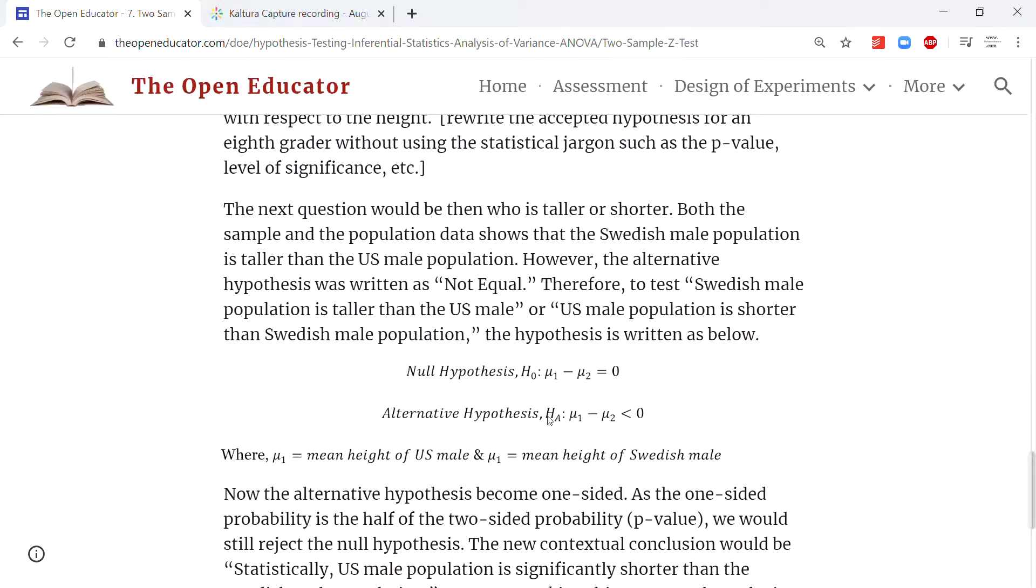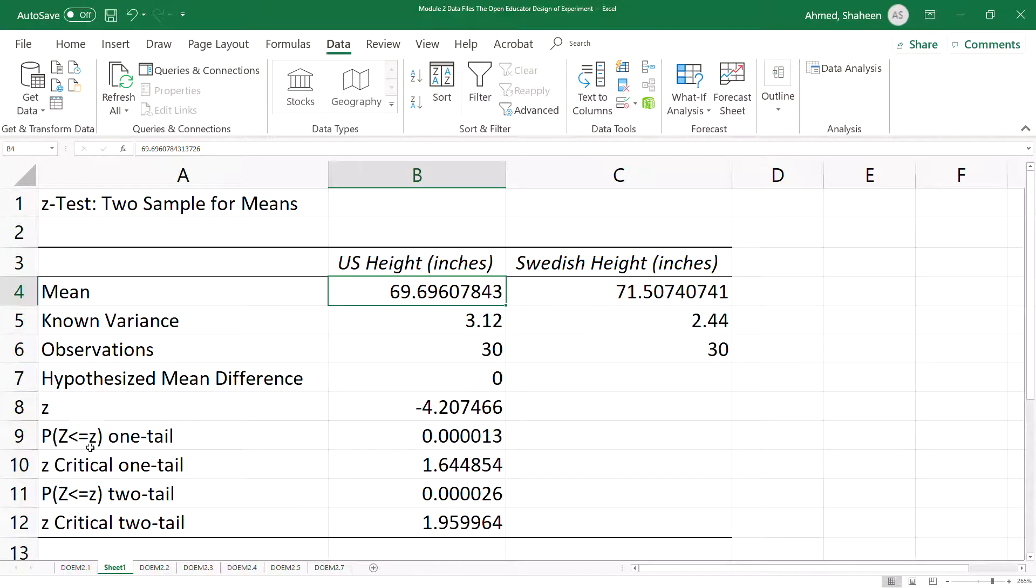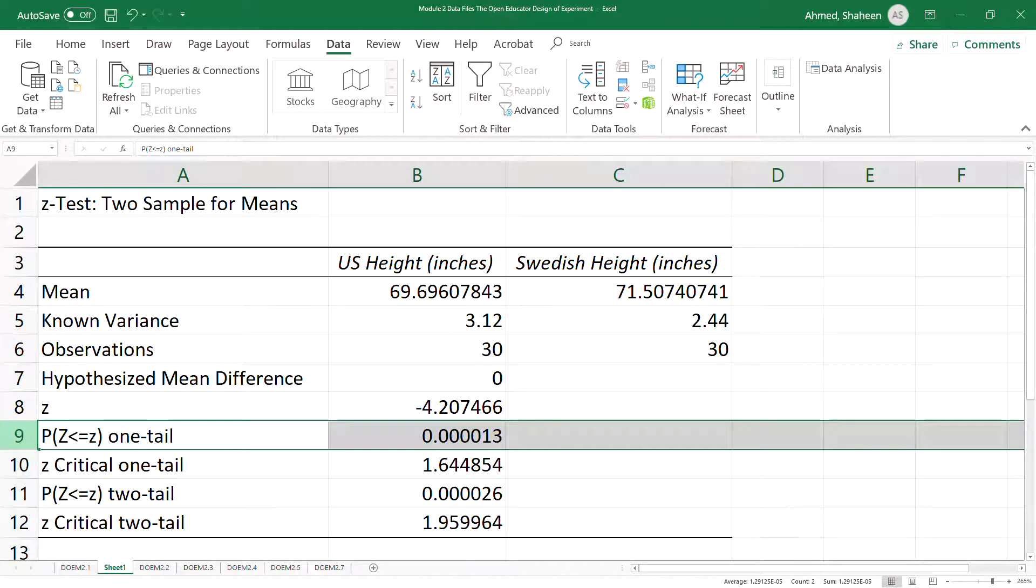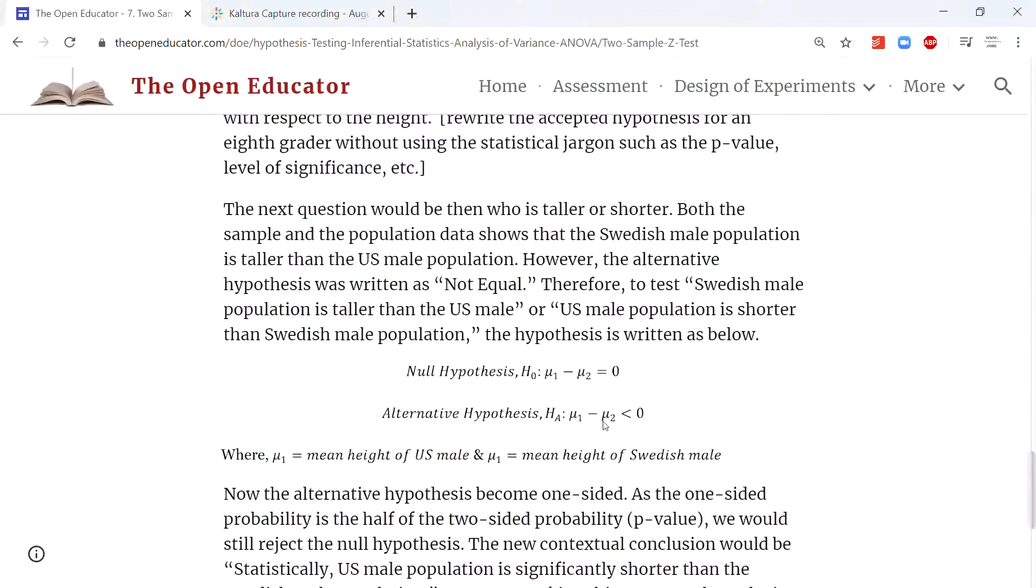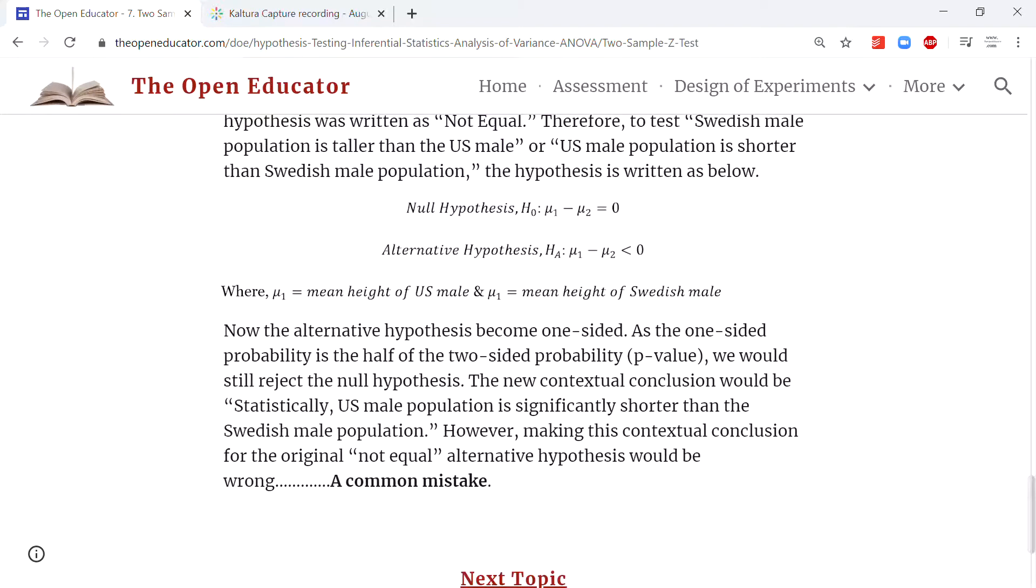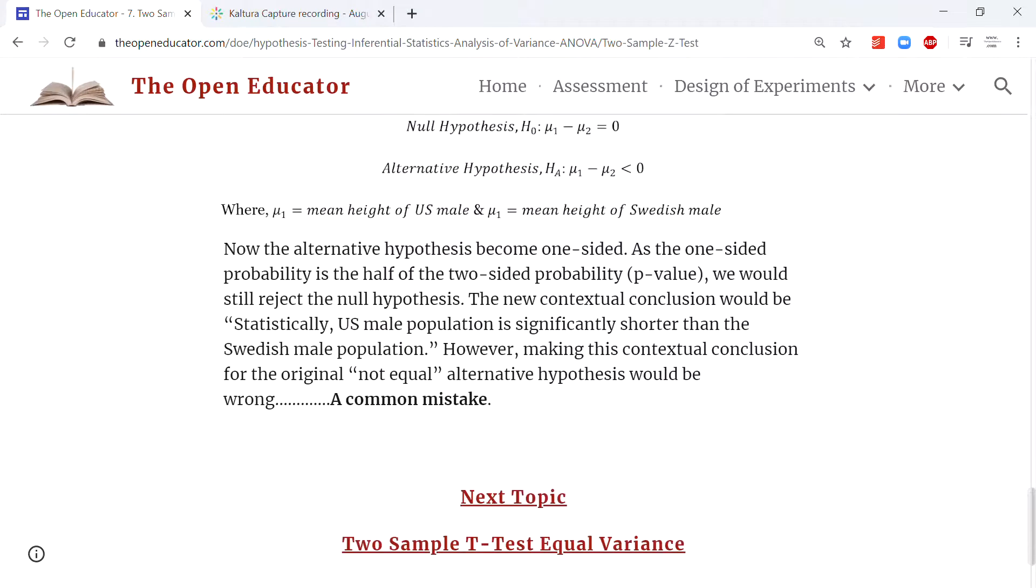You have to make the alternative hypothesis like this: the US male is smaller than the Swedish male. For this alternative hypothesis, it's a one-sided test, so the p-value is basically half of what was calculated. With this p-value, we will still reject the null hypothesis and accept the alternative, meaning that the Swedish male population is statistically taller than the US male population.